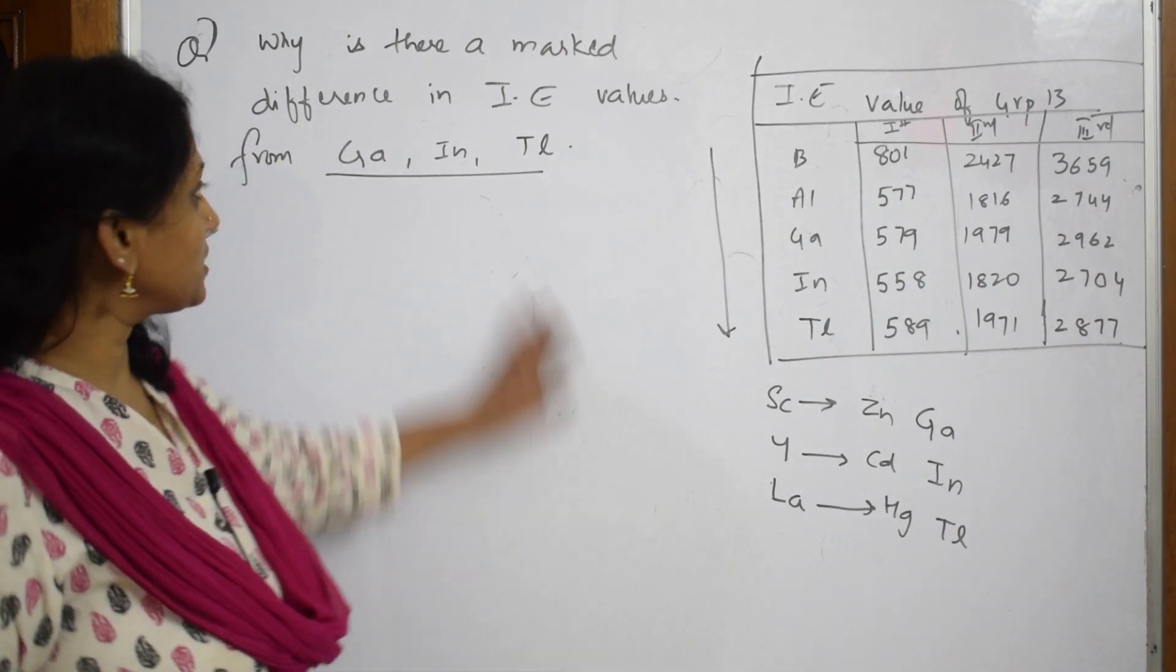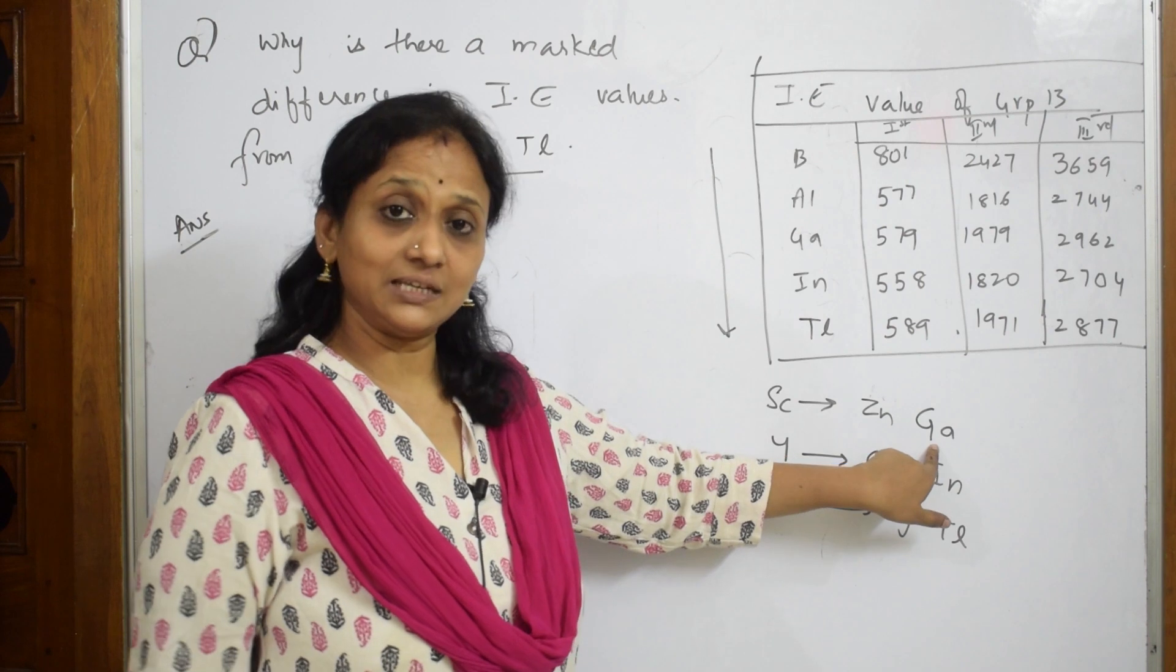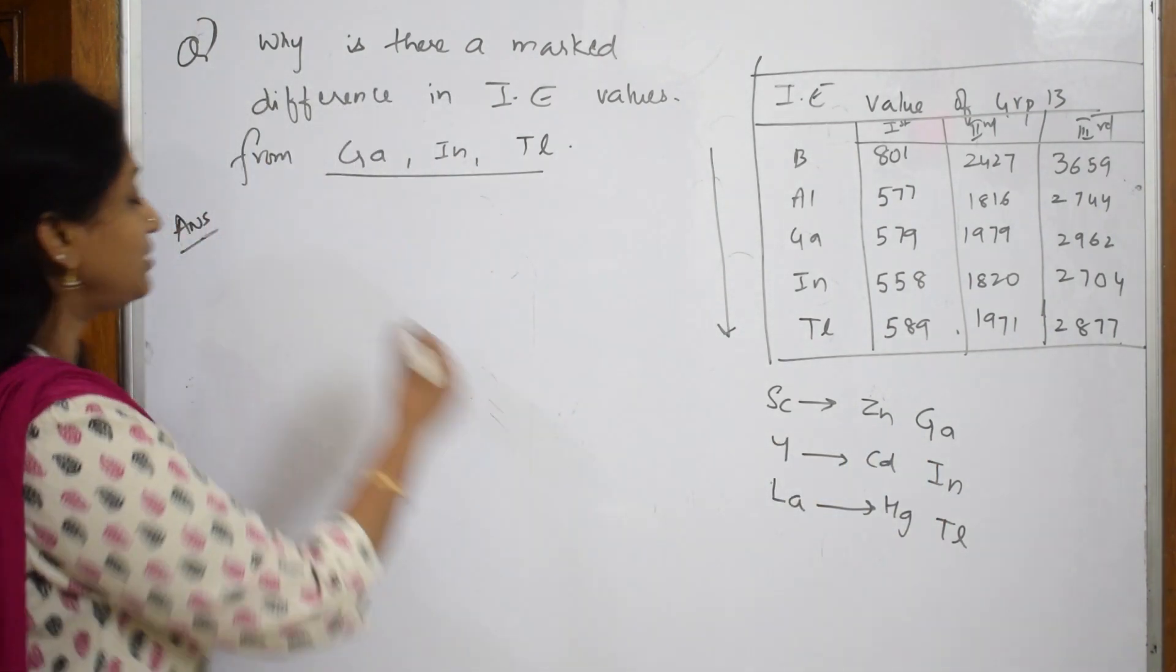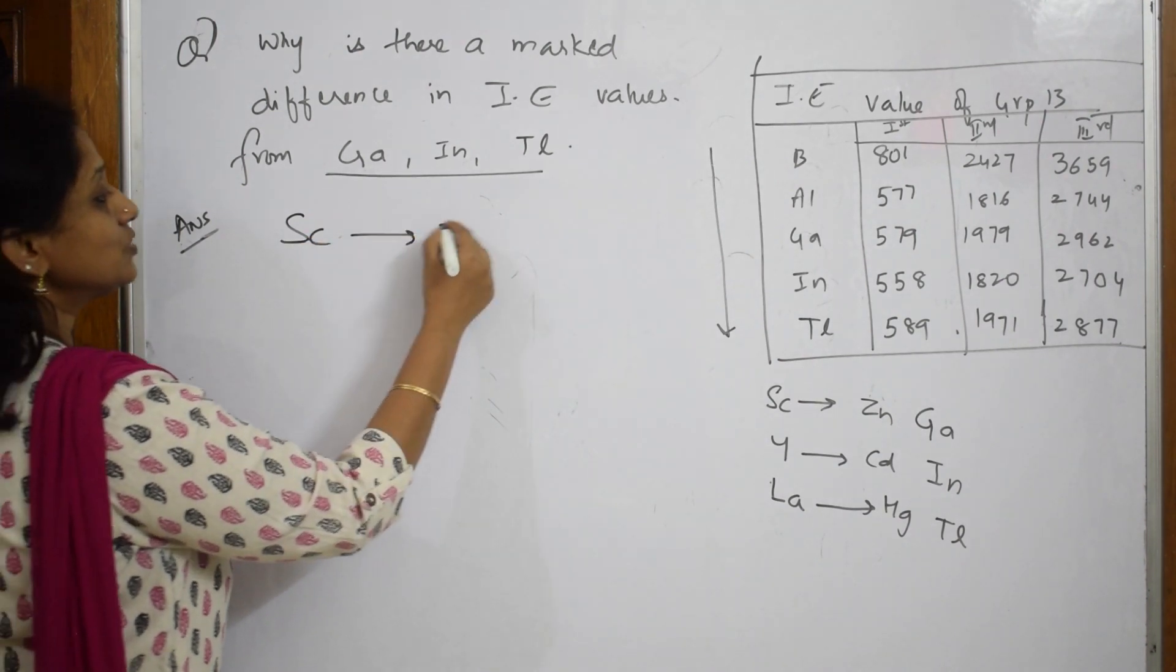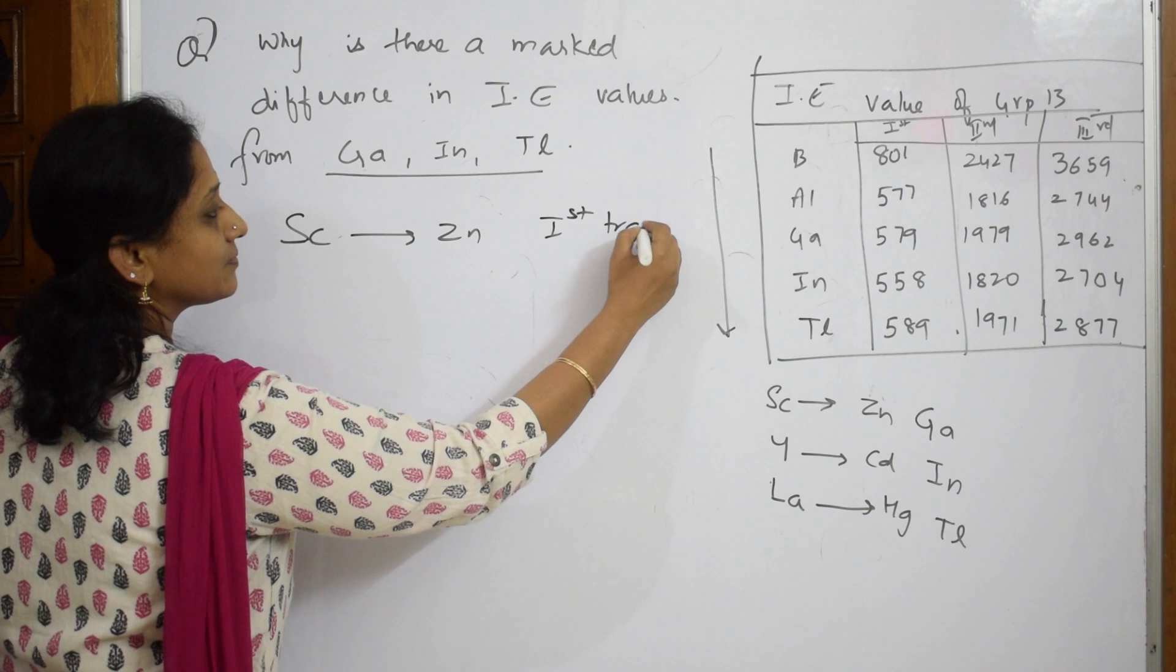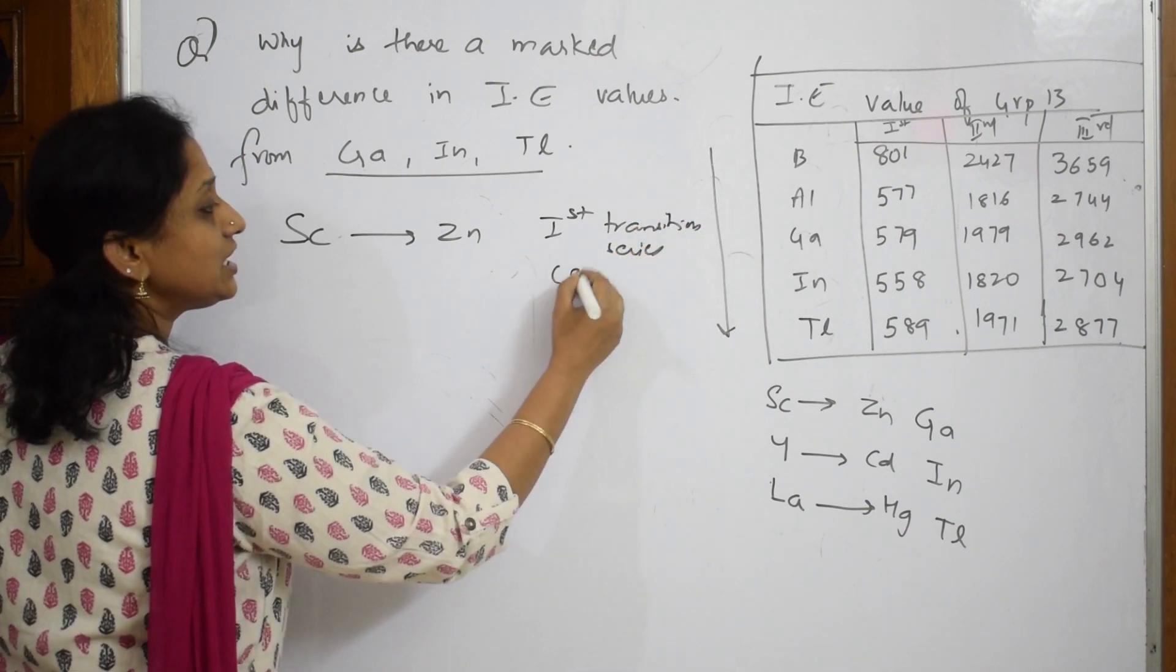When I have to speak about Gallium - they have asked from Gallium. Before Gallium, what elements do we have? We have Scandium to Zinc, which is the first transition series. What is filled here? 3d electrons are filled.